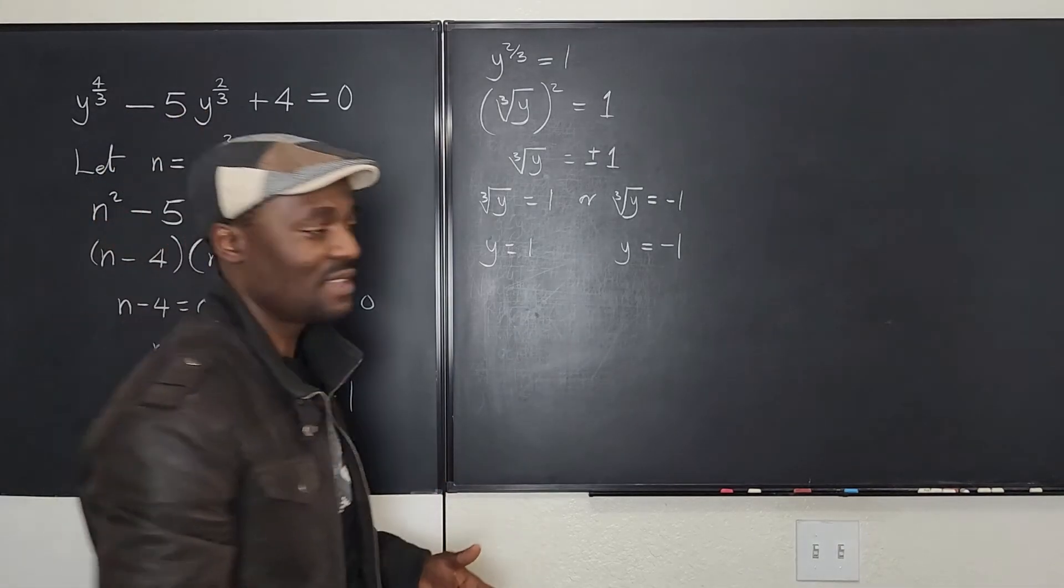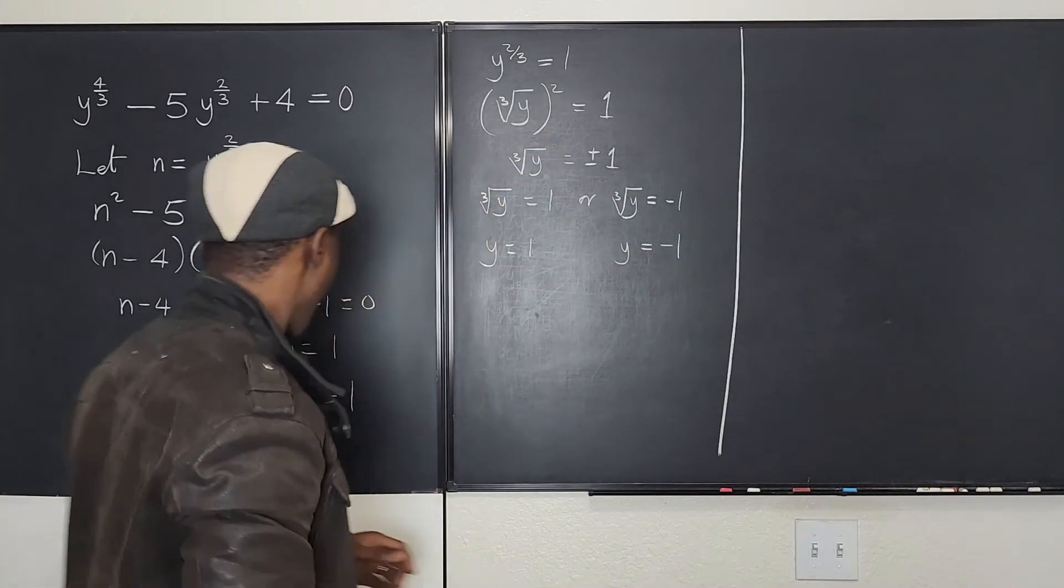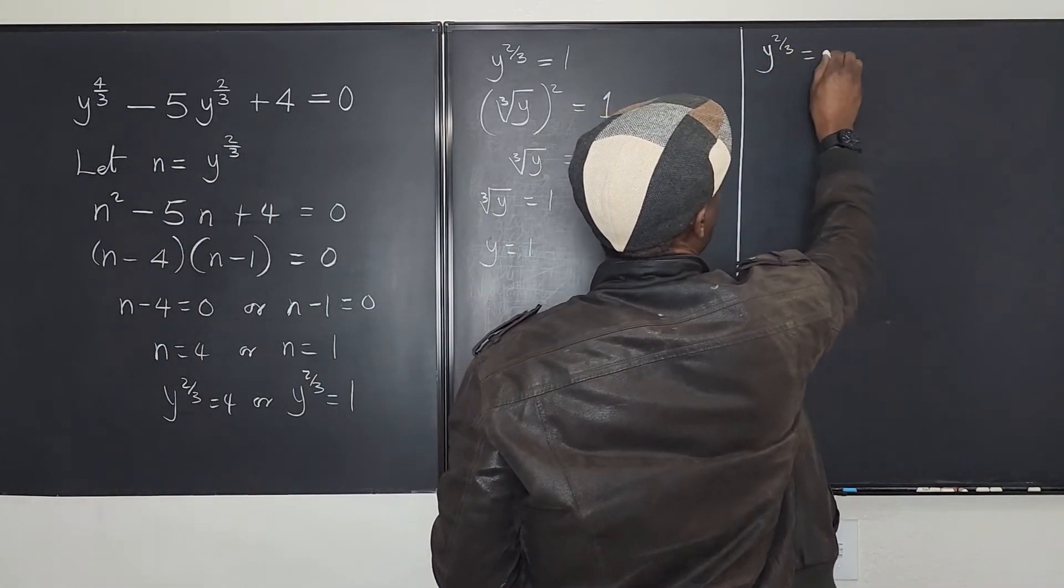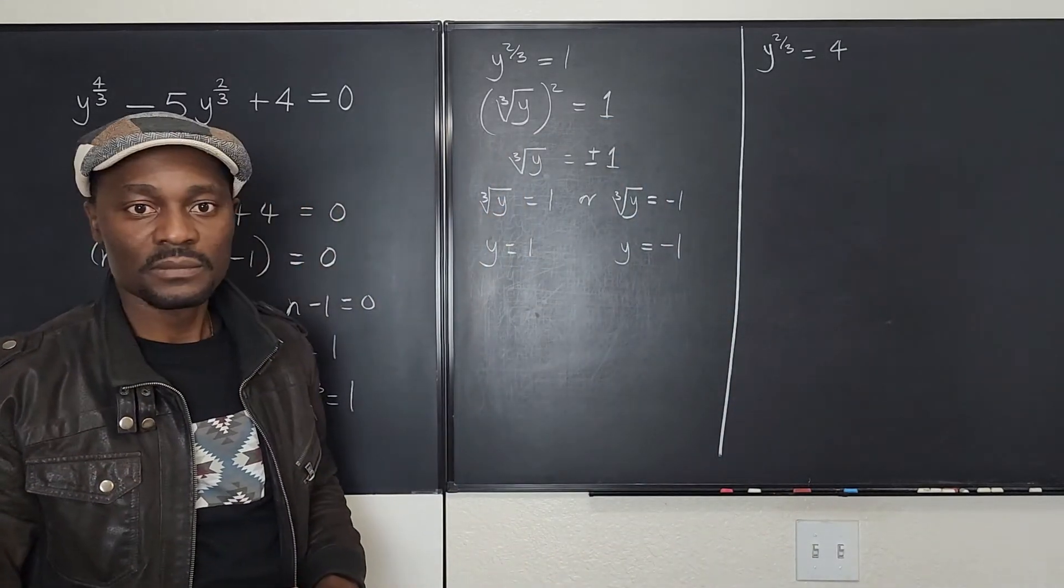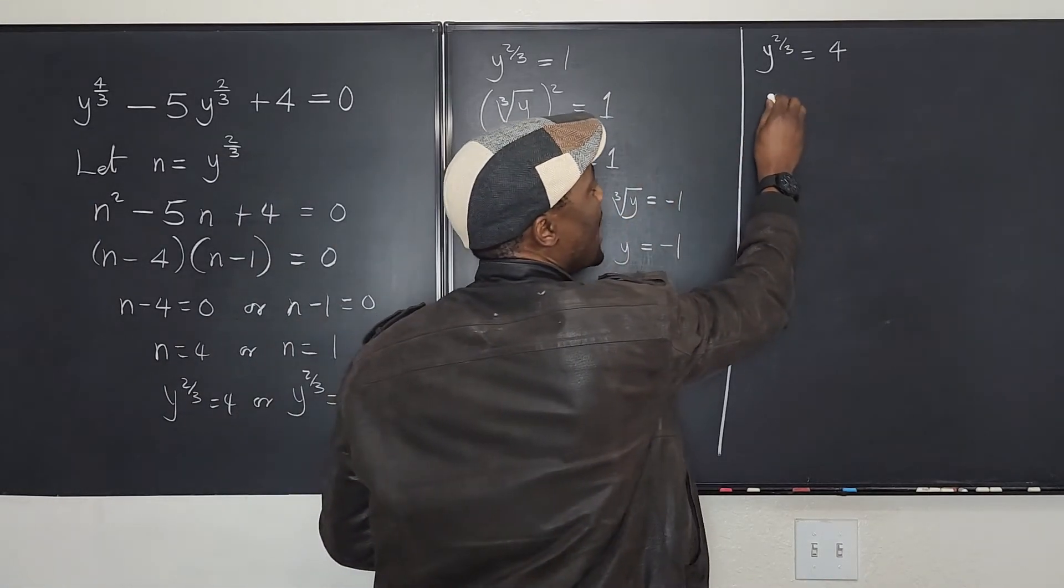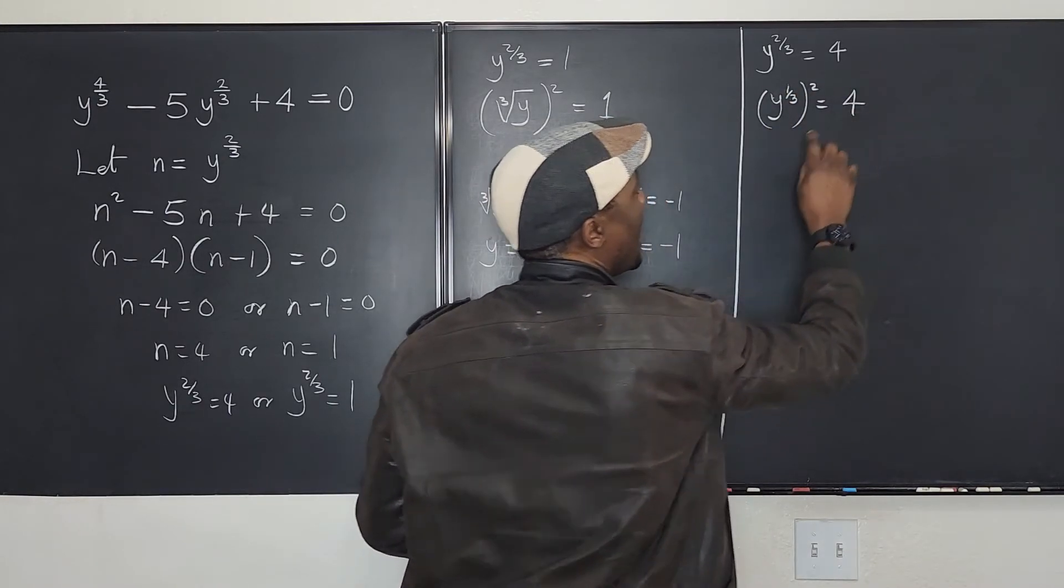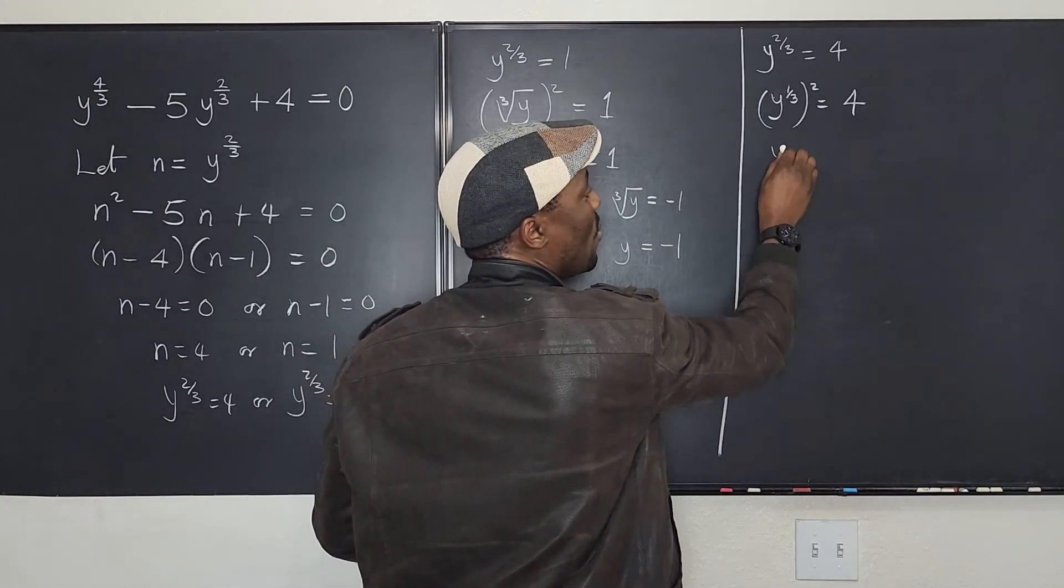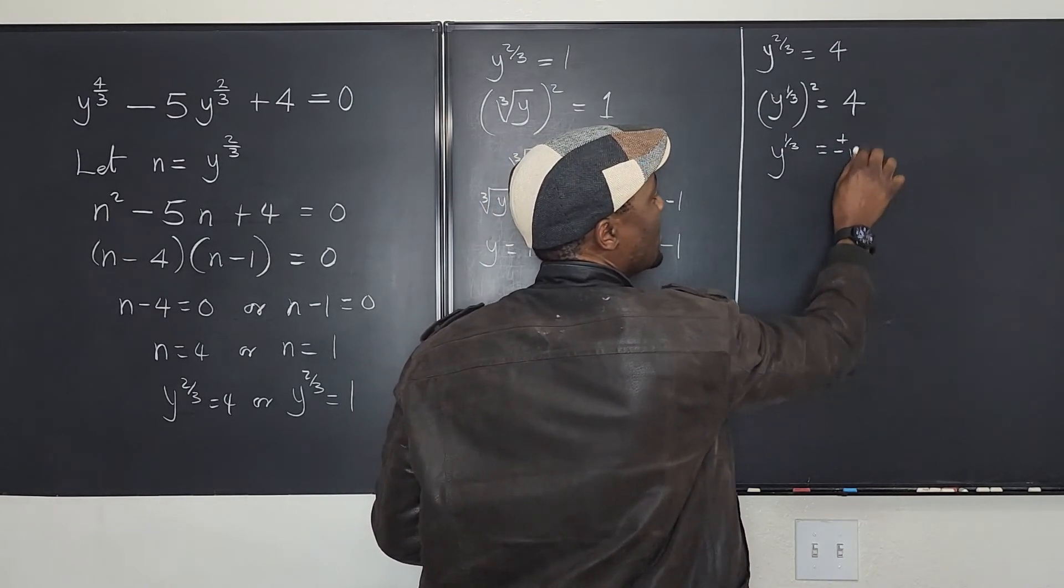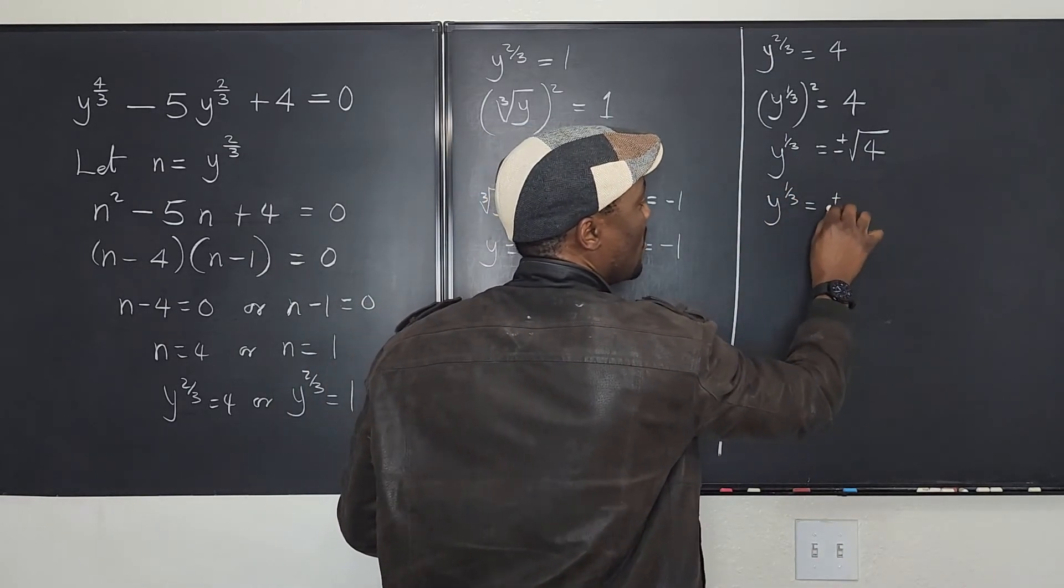So now let's go back and do the same thing for this. Now that I've explained the idea behind it, now you see that we could actually solve for this one. We could say that y to the two-thirds is equal to four. We can write this as the cube root, or instead of writing the cube root symbol, I could write y to the one-third squared is equal to four. I take the square root of both sides. I'm going to have y to the one-third is equal to plus or minus two, which is the square root of this plus or minus square root of four.